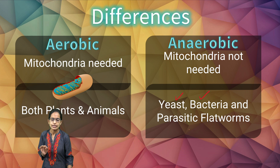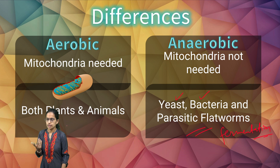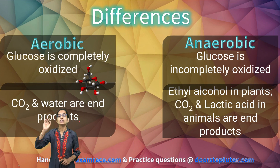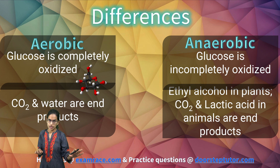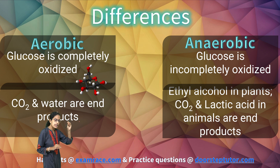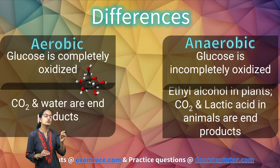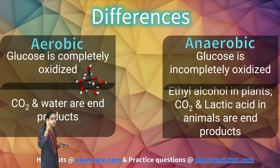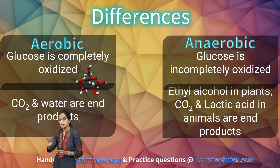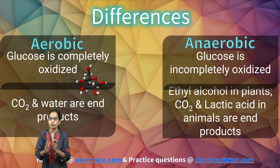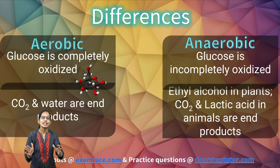Anaerobic respiration occurs in yeast, bacteria, and parasitic flatworms, and fermentation is one of the common processes associated with it. Aerobic respiration takes place in both plants and animals. Another major difference: in aerobic respiration, glucose is completely oxidized into carbon dioxide, water, and energy. In anaerobic respiration, glucose is incompletely oxidized — in plants it leads to formation of ethyl alcohol, and in animals it leads to formation of lactic acid. These two end products — ethyl alcohol and lactic acid — are very important to know.